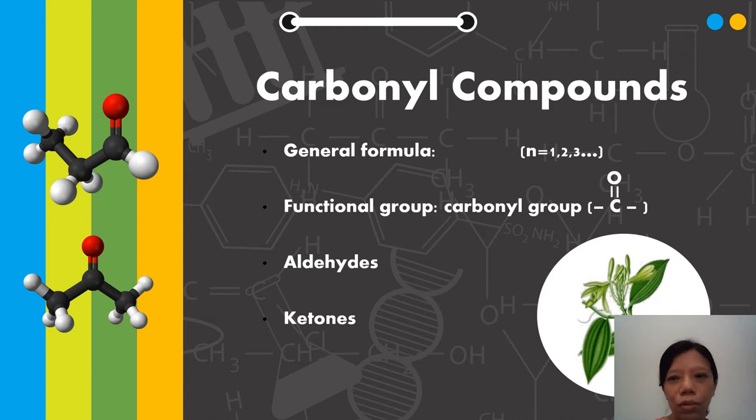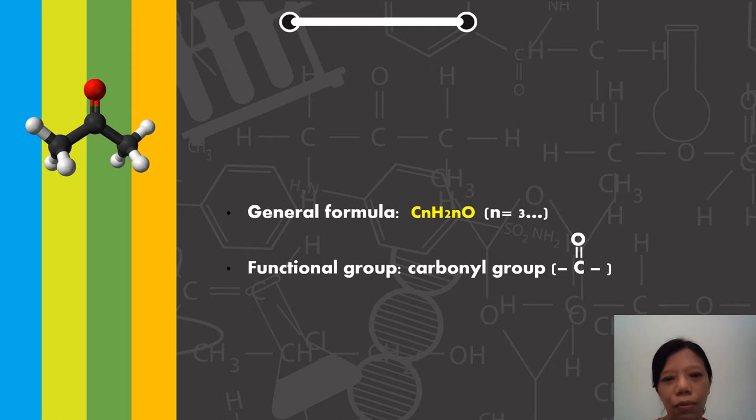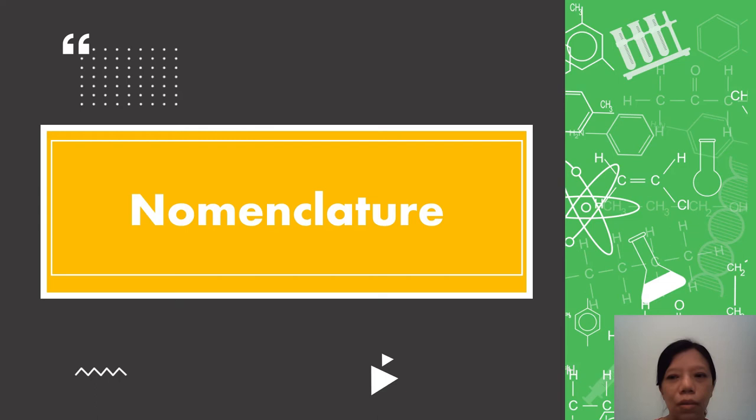This is the general formula of carbonyl compounds: CnH2nO, where n is 1, 2, and 3. The functional group of carbonyl compounds is the carbonyl group. For aldehydes, the functional group is the aldehyde group CHO or C double bond O H. For ketones, the general formula CnH2nO must start from 3 because the carbonyl group must be bonded to 2 molecules. The functional group of ketones is the carbonyl group.